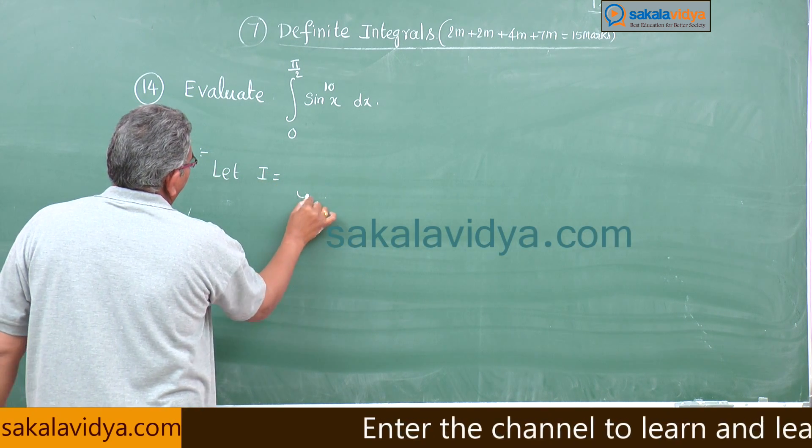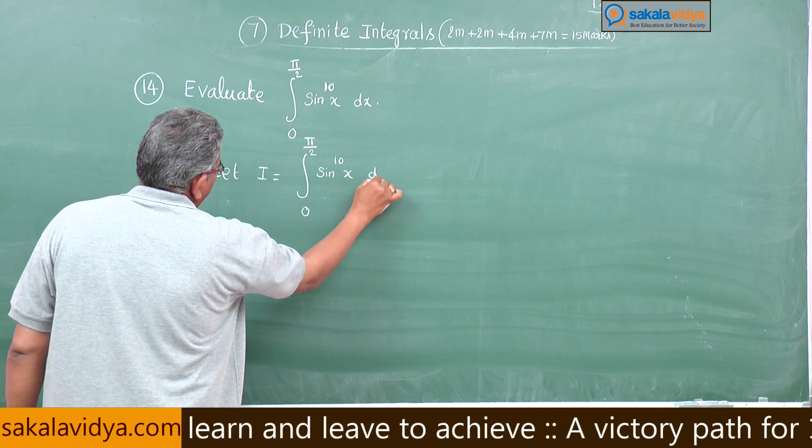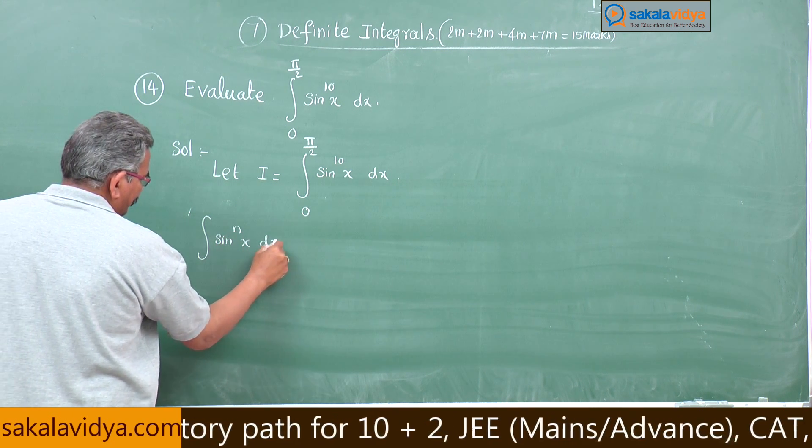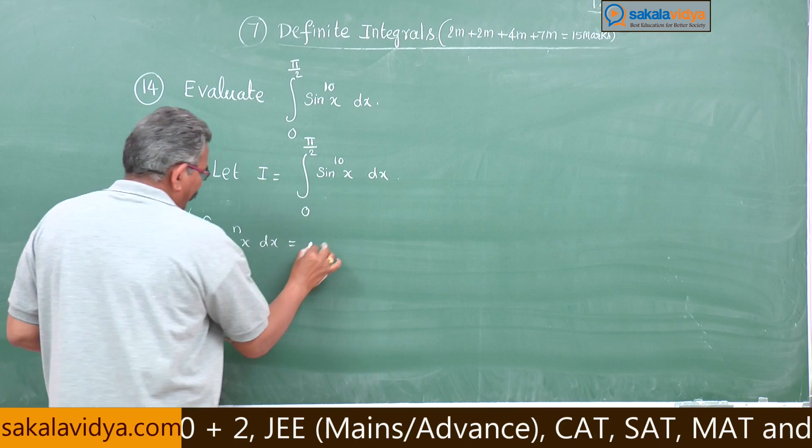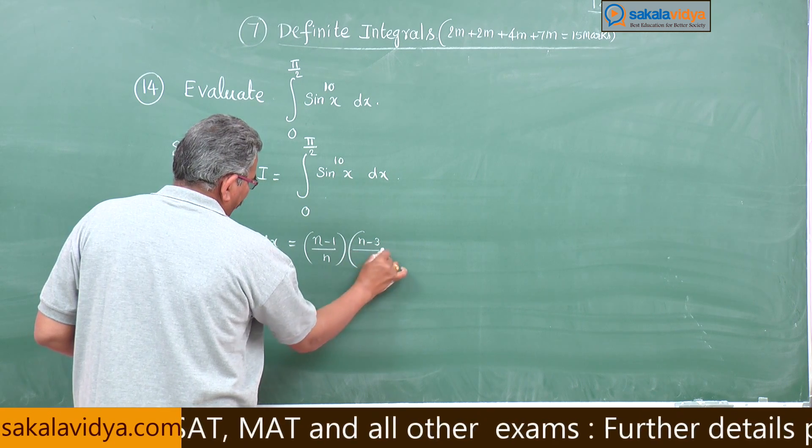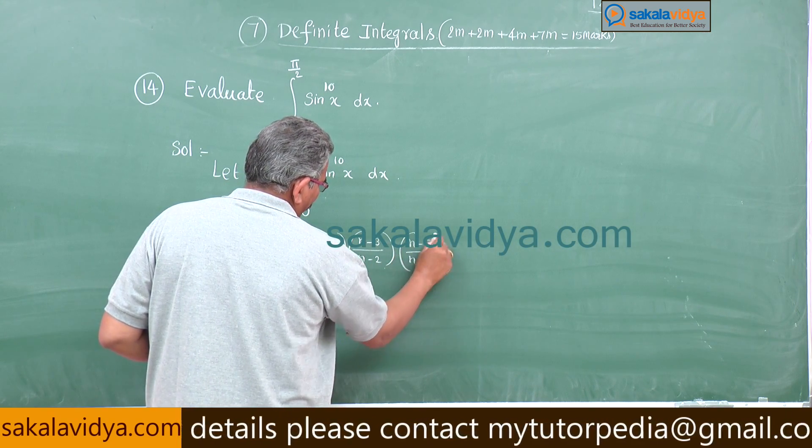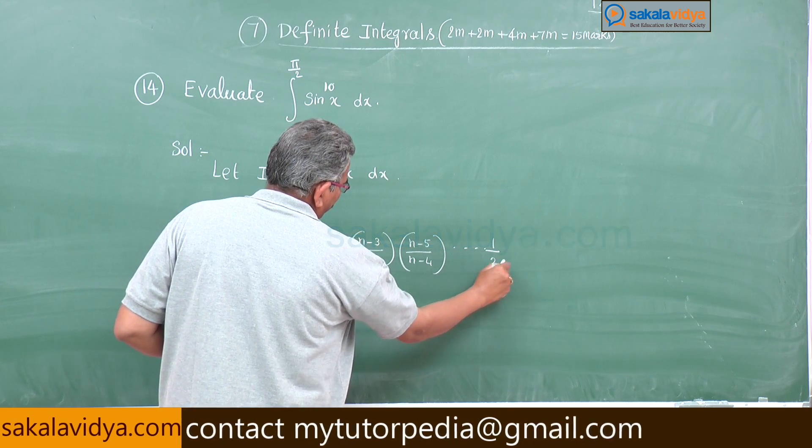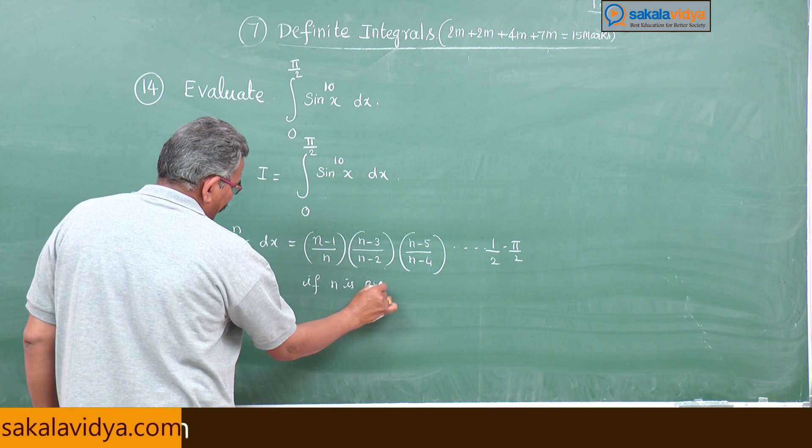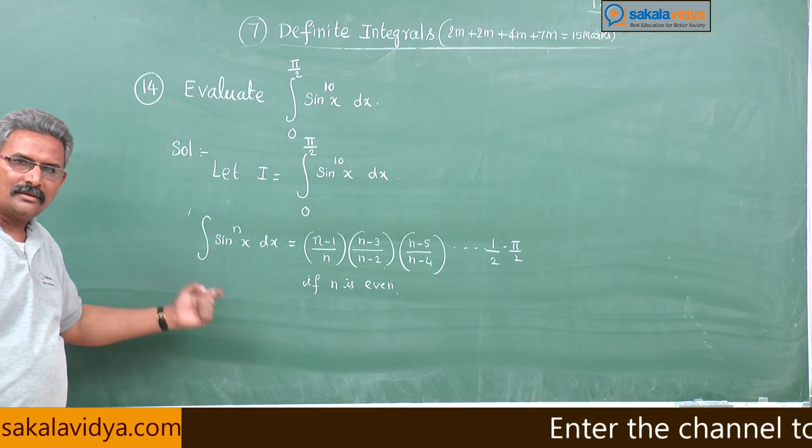Let I equals integral 0 to pi by 2 sin x to the power of 10 dx. We have the formula sin x to the power of n dx equals n minus 1 by n, n minus 3 by n minus 2, n minus 5 by n minus 4 and so on, 1 by 2 into pi by 2 if n is even. This formula is known as Wallis formula.